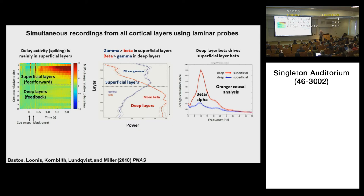With Granger causality influence on the y-axis and frequency on the x-axis, red shows the influence from deep layers to superficial layers, and blue the opposite. What this shows is that deep-layer beta is controlling superficial-layer beta, in the beta and alpha range. The influence is one-way — from deep to superficial, not the other way around. Gamma isn't really doing much of anything by itself. This makes sense: if you want the top-down signal to regulate storage in working memory, you want it to be one-way — top-down controlling bottom-up — so you can control what you think about.